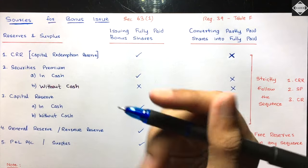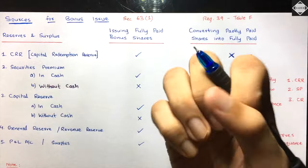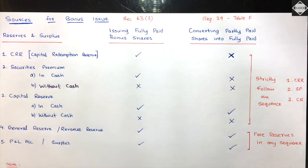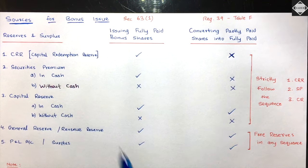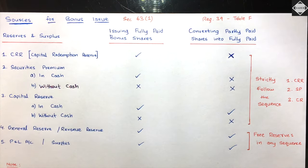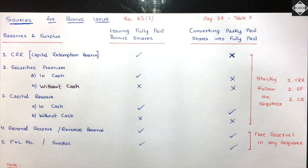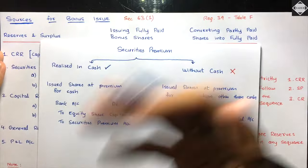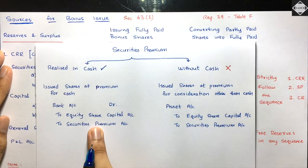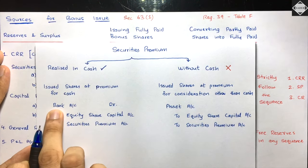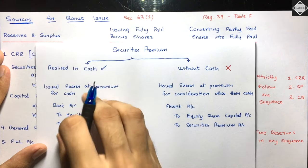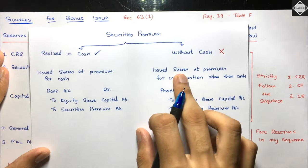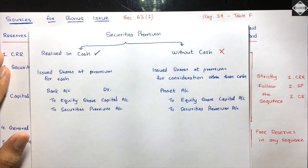The only utilization of CRR is to issue fully paid-up bonus shares - you can't use CRR for any other purpose. That is why CRR gets first priority in reserve utilization when issuing fully paid-up bonus shares. You must strictly follow the sequence: first CRR, then Securities Premium, then Capital Reserve, then Free Reserves.